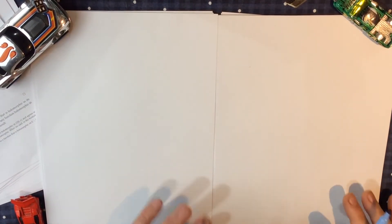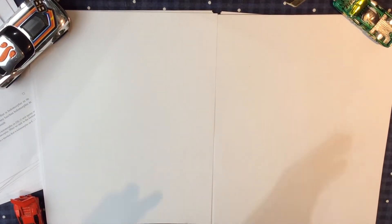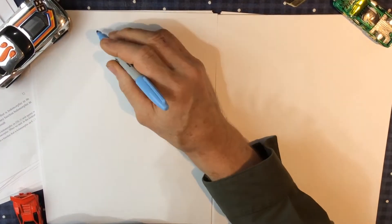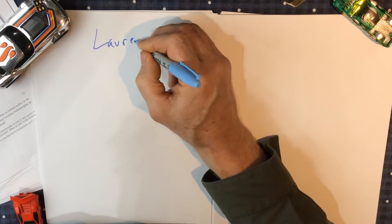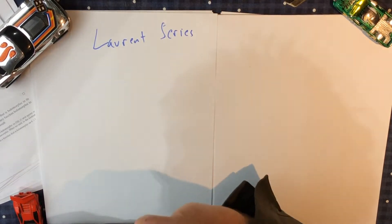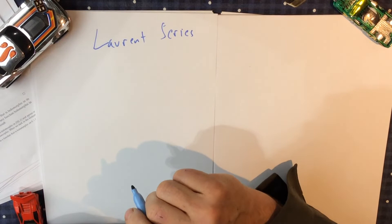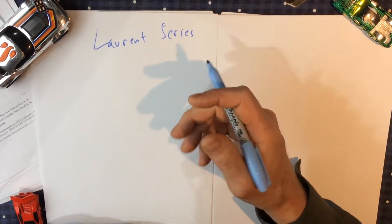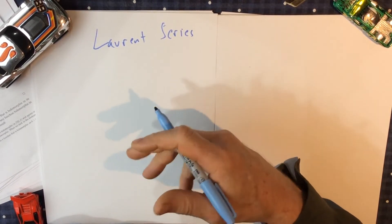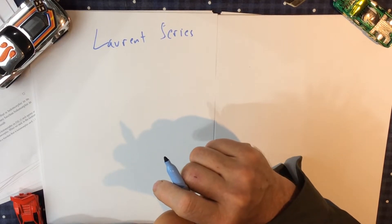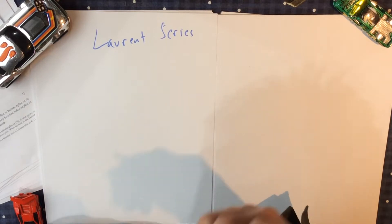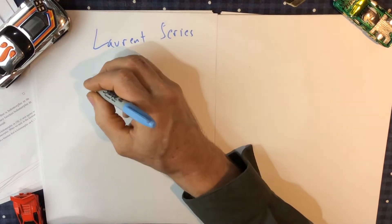We left off with Taylor series and I want to point out that we're going to develop a new series called the Laurent series. McLaurin studied Taylor series at zero. Taylor generalized it and did a Taylor series at any point A. And then Laurent studied this in the complex plane and discovered he needed something important.